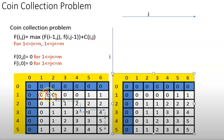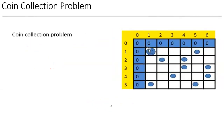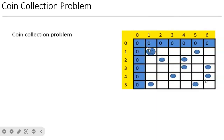Zero came from the first initial cell where the robot starts. This is the complete path from which we collected the coins. Following this path — here, here, here, here — we collected the coins. This is the path we followed to collect five coins, with the first, second, third, fourth, and fifth coin. These are the maximum coins we can collect from this board.